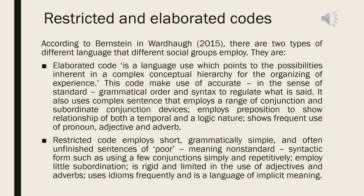According to Bernstein in Wardoff 2015, there are two types of different language that different social groups employ. They are elaborated code and restricted code. The first, elaborated code, is a language use which points to the possibilities inherent in a complex conceptual hierarchy for the organizing of experience. This code makes use of accurate grammatical order or syntax, in the sense of standard, to regulate what is said.